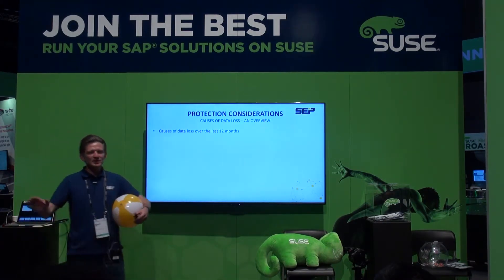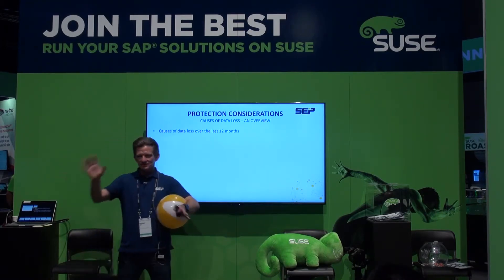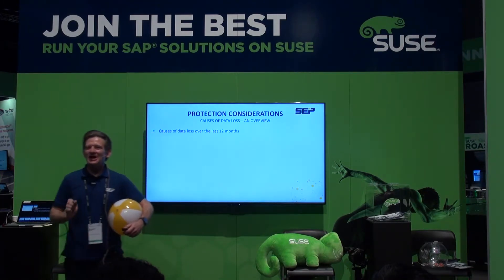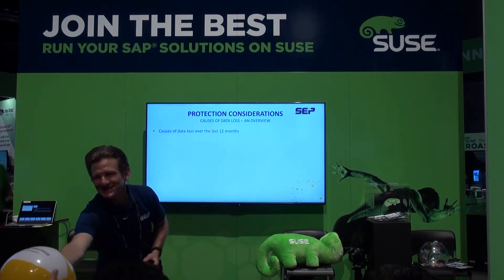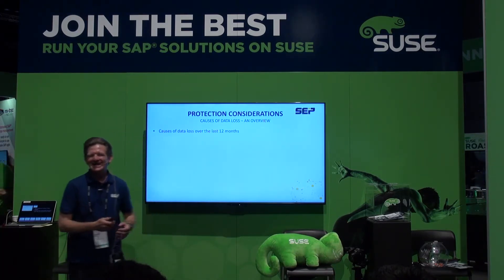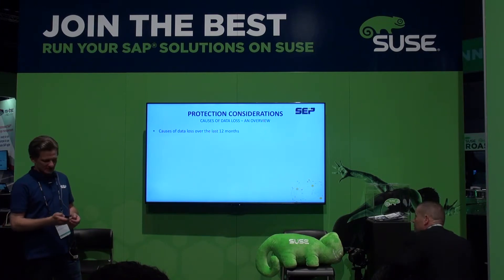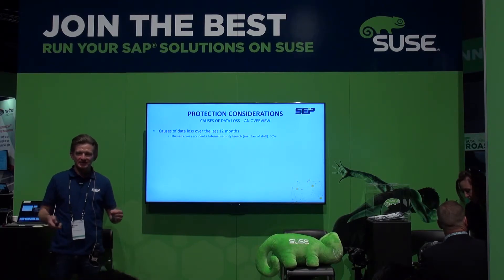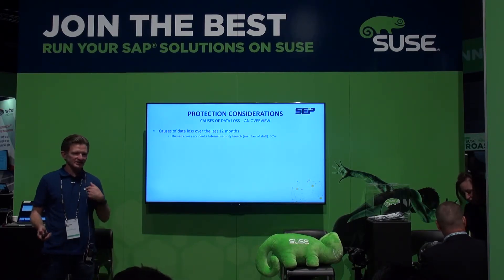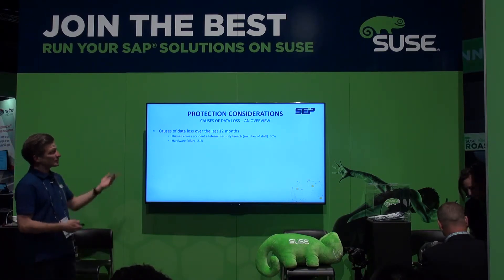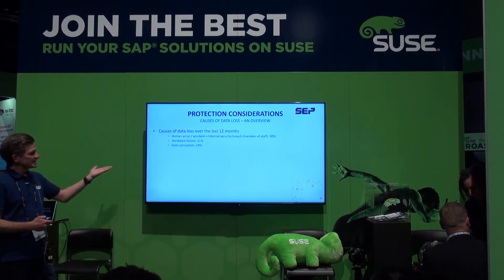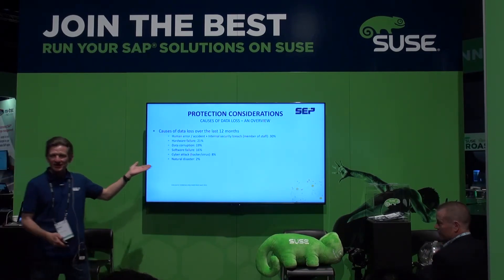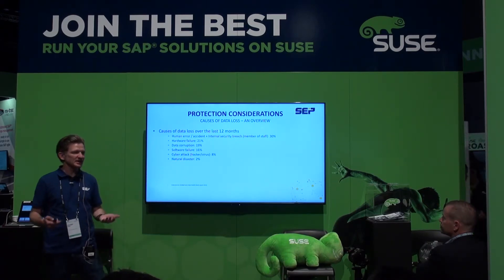What are the causes of data loss? The number one cause is human error — absolutely. We design our disaster recovery systems generally for disasters that don't often come up. Hardware failure accounts for 21% of incidents, followed by data corruption, software failure, and cyber attacks. Natural disasters account for only about 2% of data loss events — yet those are what we most often design for.